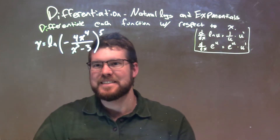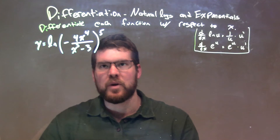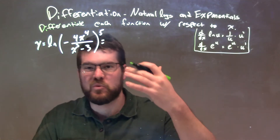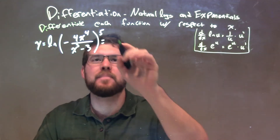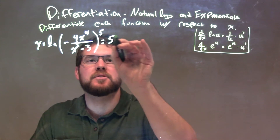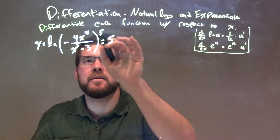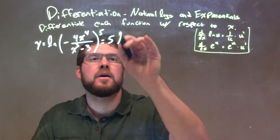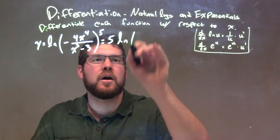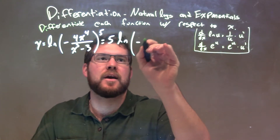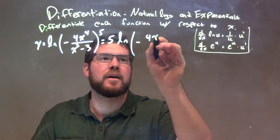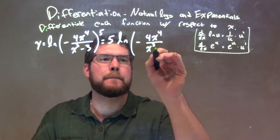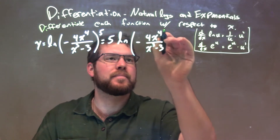What I'm going to do first is actually simplify this using our rules of logarithms. The 5 can come out front — that's one of the rules of logarithms. So we have 5 times the natural log of negative 4x to the fourth over x to the third minus 3.